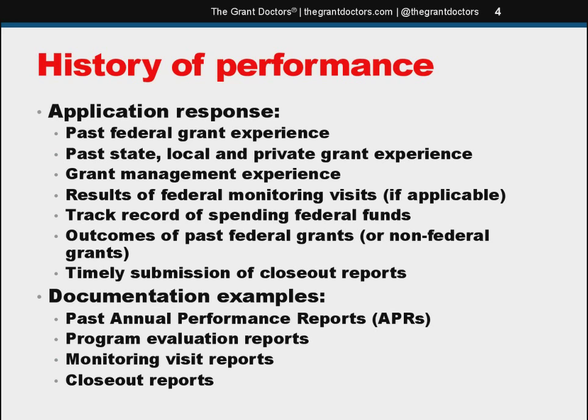History of performance: if you can, talk about your past federal grant experience. If you have past federal grant experience, make sure you provide the grant names, the dates, the award numbers, the project titles, any information that will help the funding agency locate your past records in their system. Describe your experience spending federal funds — or non-federal funds if you've never had a federal grant. You just want to make sure the reviewers know that you have a system and procedures in place, first to quickly get a new program up and running, and second to keep the program operational through the life of the grant.